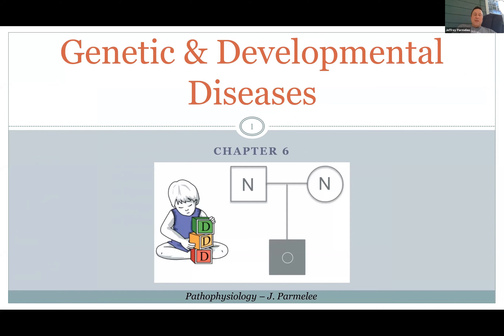I'm sure you're familiar with some genetic diseases: color blindness, Down syndrome, sickle cell anemia, and diseases that happen in utero. Of course, all this development has to happen.